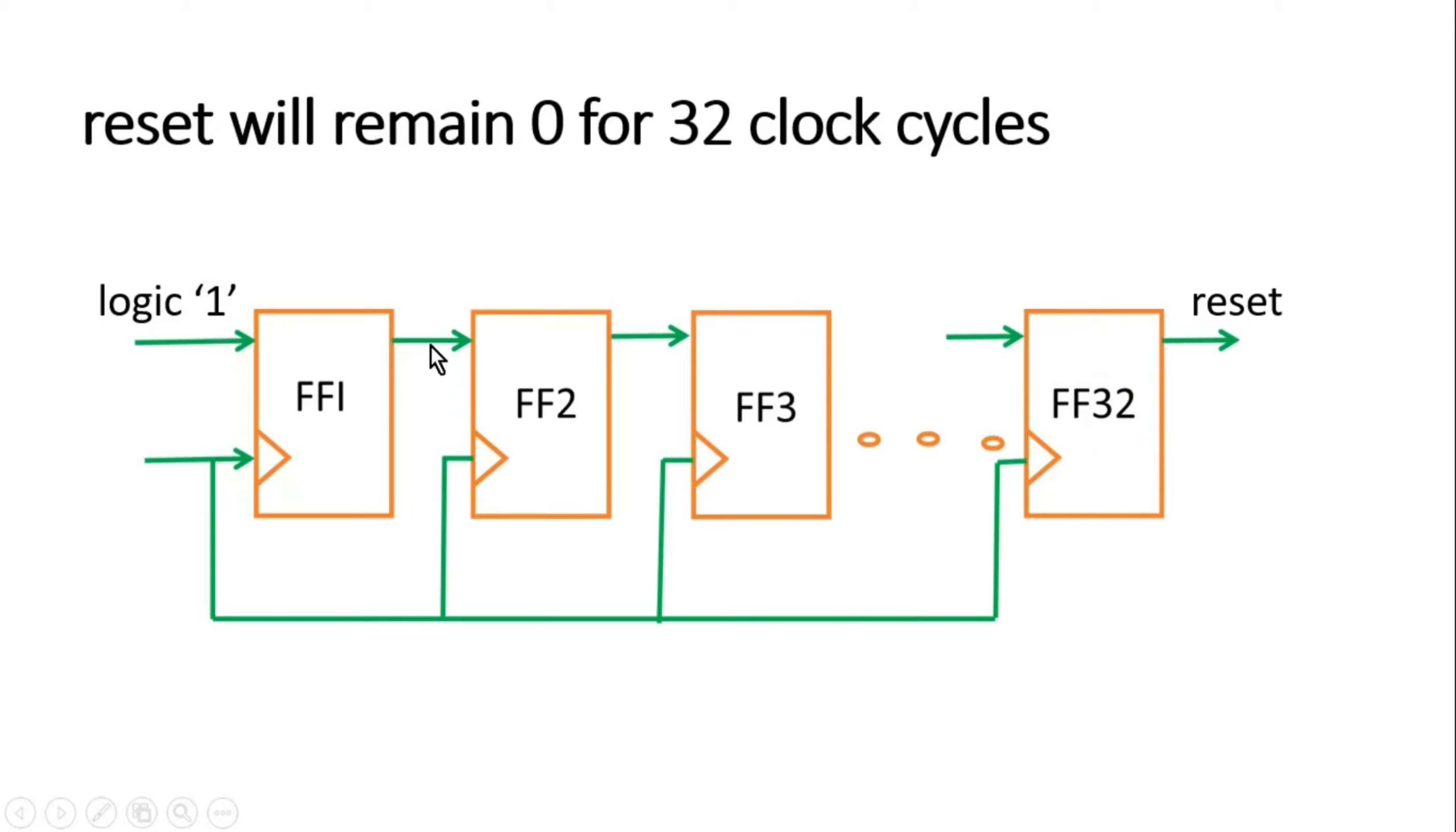After 32 clock cycles, the output of all the flops will remain one, and the reset signal will remain one thereafter. This is what we are expecting from our logic.